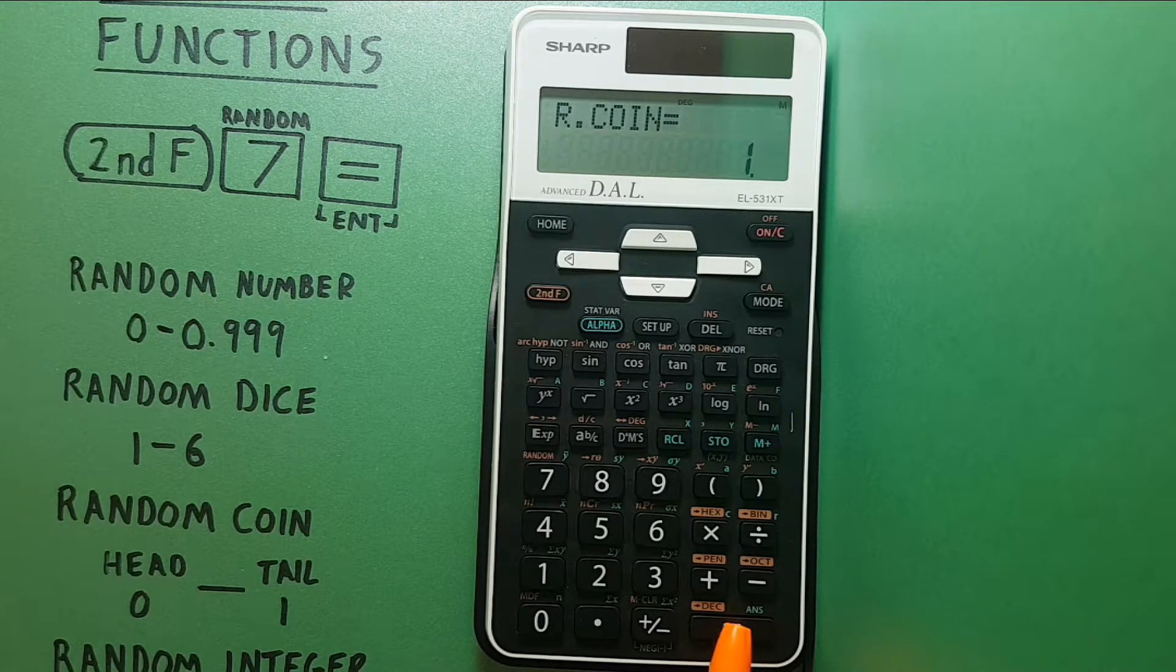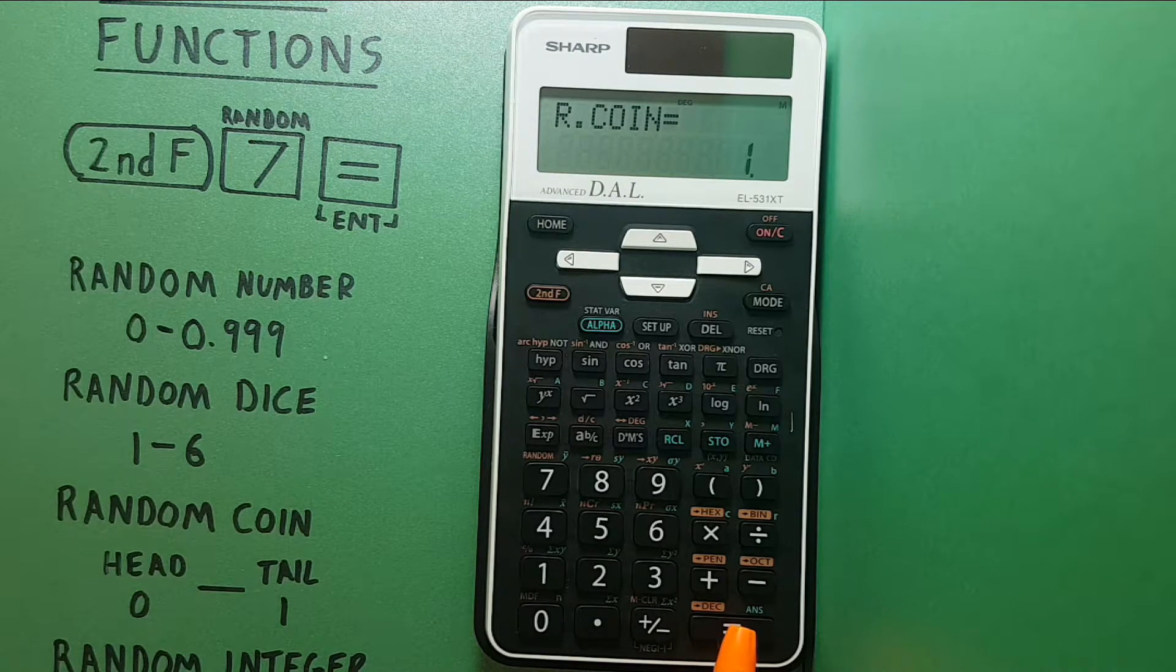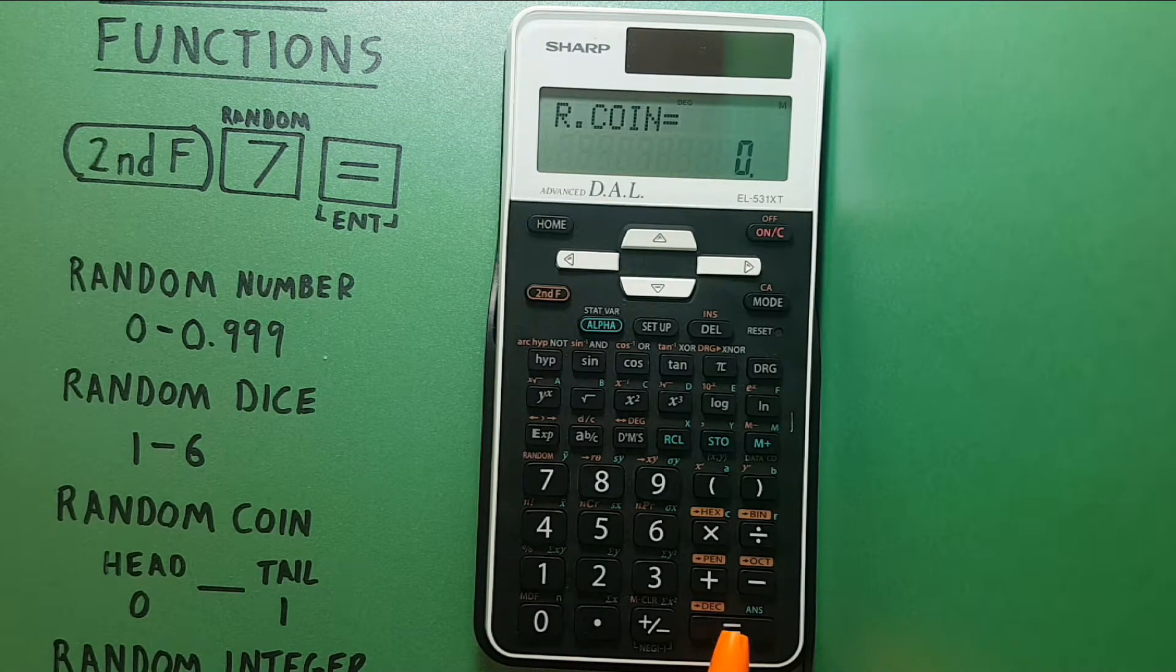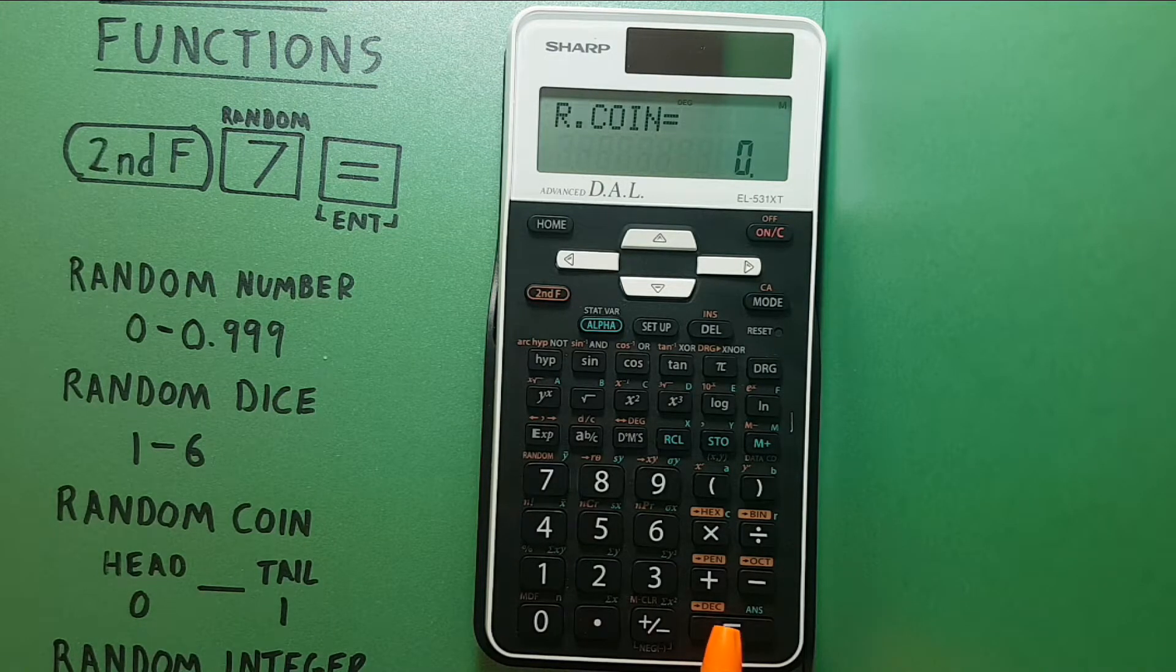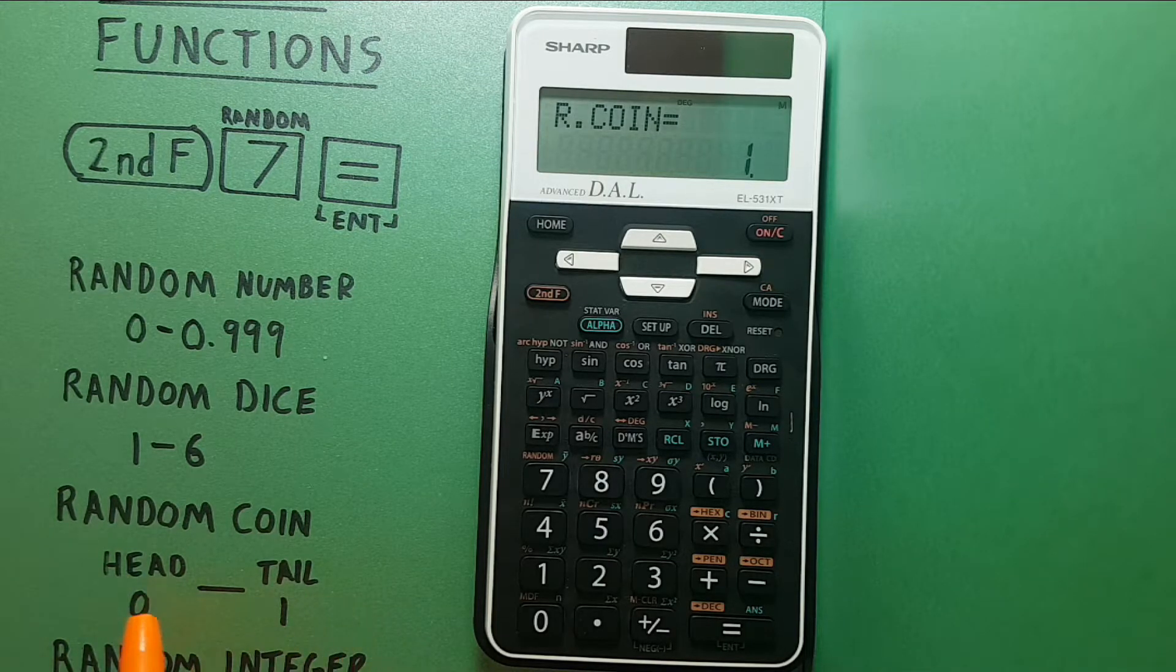We got a one, equals again, a one again, equals again, a one again, lots of tails on this one. Oh and that time we got a zero. Another zero, this time a one. You can see it randomly goes between zero and one.